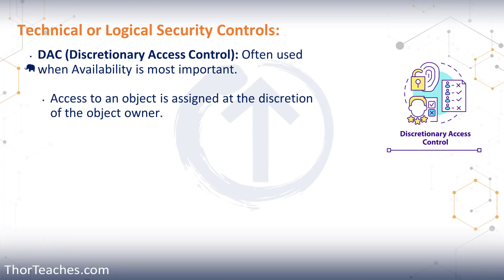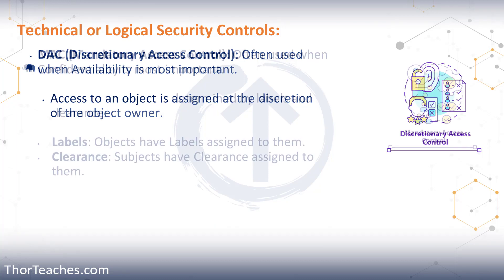We can use discretionary access control within role-based access control, and that's really true for many of the combinations. We don't have to have one or another. We can have one major access control type — in most private companies it's role-based or attribute-based — but then below that, in certain areas, we can have other types.